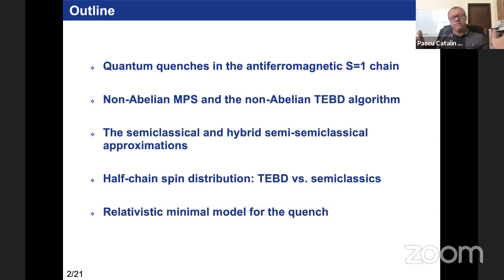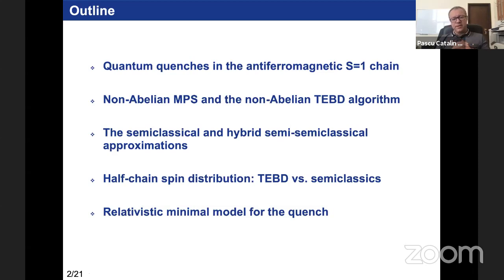The main problem we are trying to address is to study what happens with the spin distribution of the half chain — analogous to the entanglement entropy problem. You cut your system in half and look at what happens with the spin distribution and how it evolves in time following the quench. In the end, if I have time, I also present a minimal model, a microscopic model that gives insight into the propagation of quasi-particles.